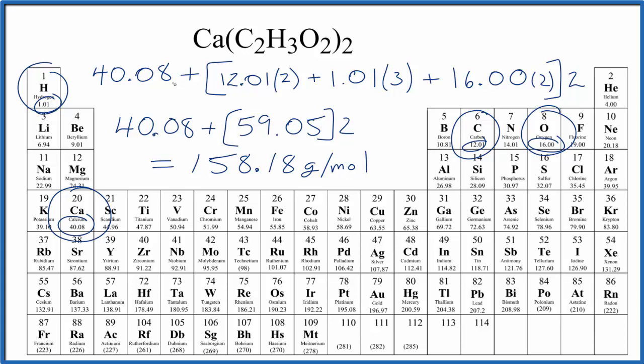My periodic table rounds to two decimal places. If your periodic table rounds to a different number, you might have a slightly different answer. This is Dr. V with the molar mass for calcium acetate, Ca(C₂H₃O₂)₂. Thanks for watching.